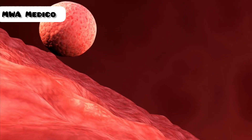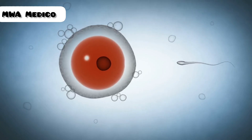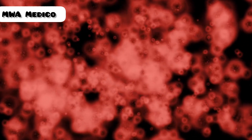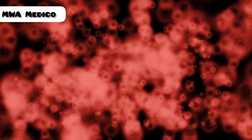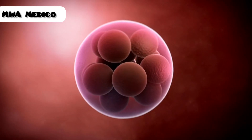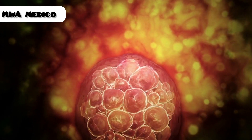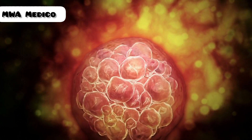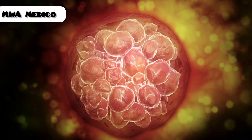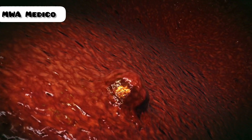Stage 1: Pre-embryonic stage — the first week, from fertilization to implantation. Fertilization: the sperm fuses with the egg, forming a zygote. Cleavage: rapid cell division of the zygote as it travels down the fallopian tube. Morula: a solid ball of cells. Blastocyst: a hollow sphere of cells with an inner cell mass, which will become the embryo, and an outer layer, which will become the placenta. Implantation: the blastocyst burrows into the uterine lining.